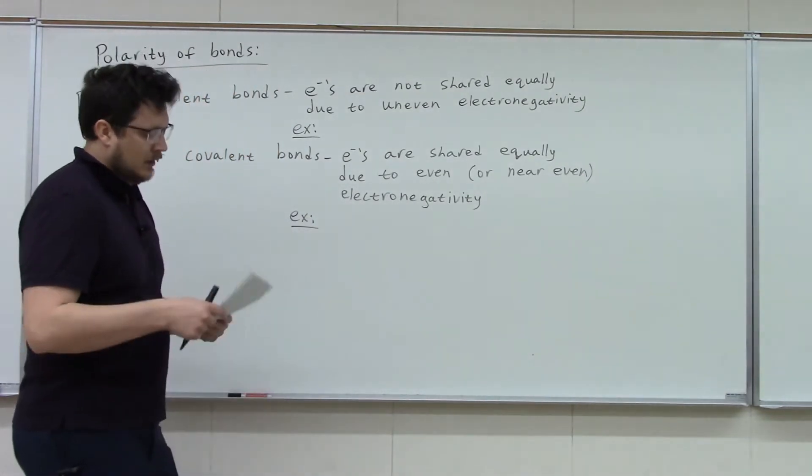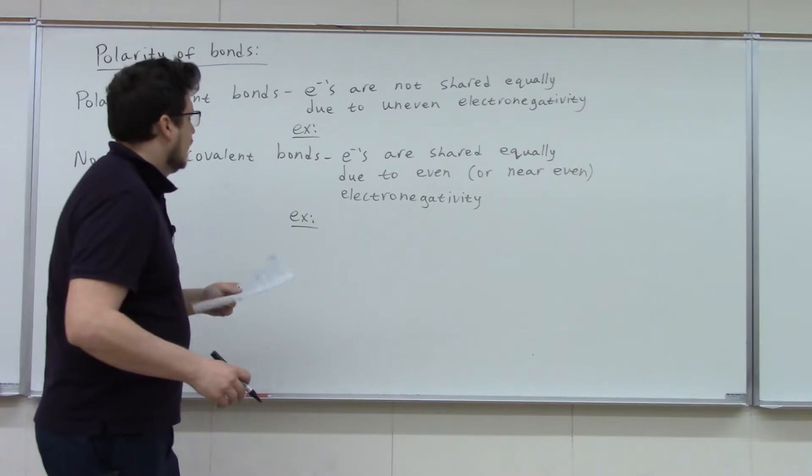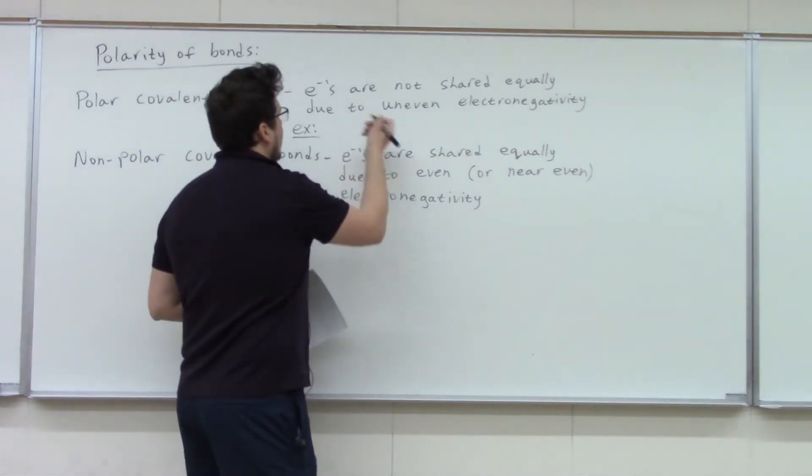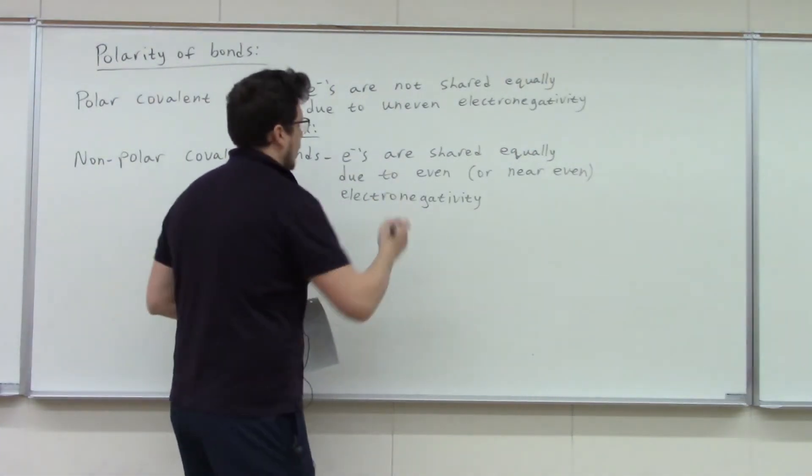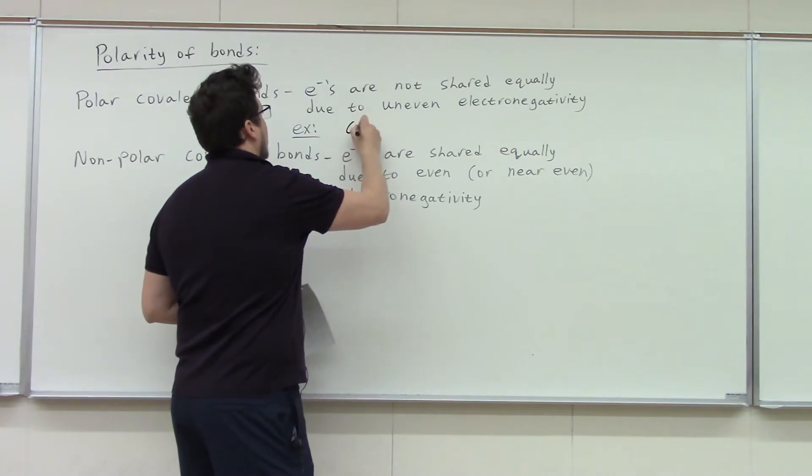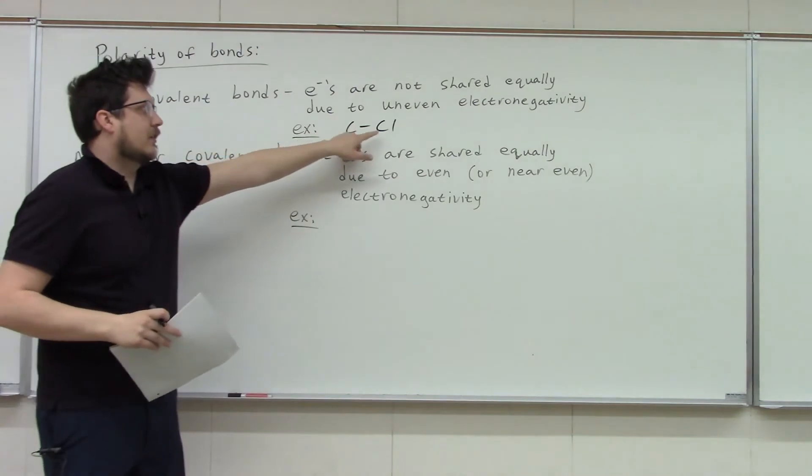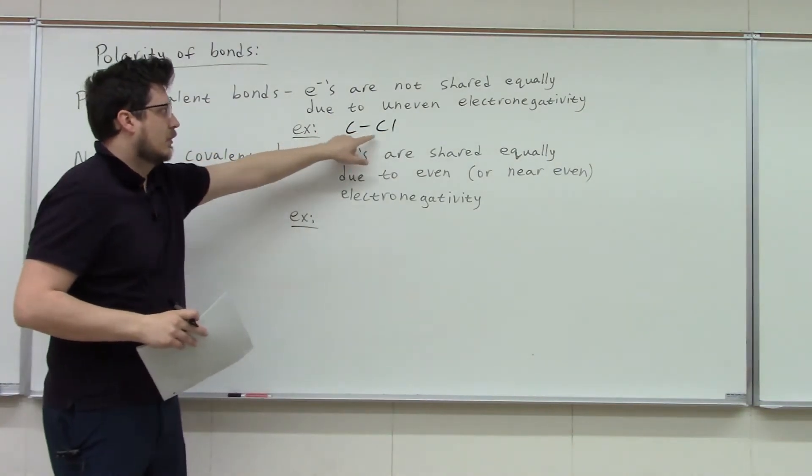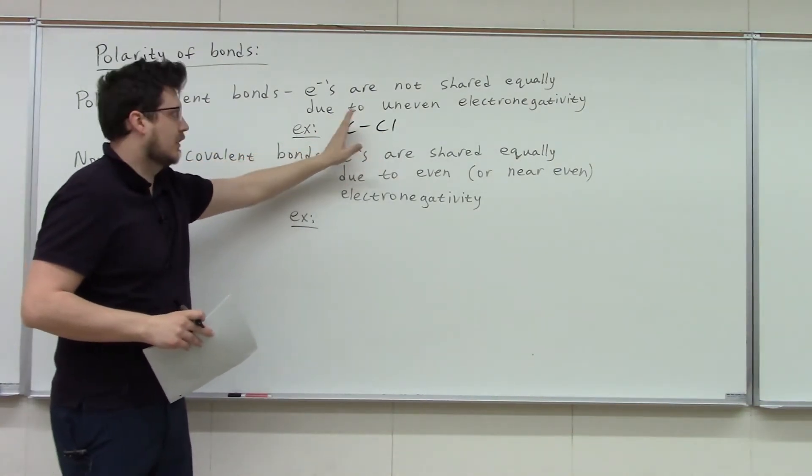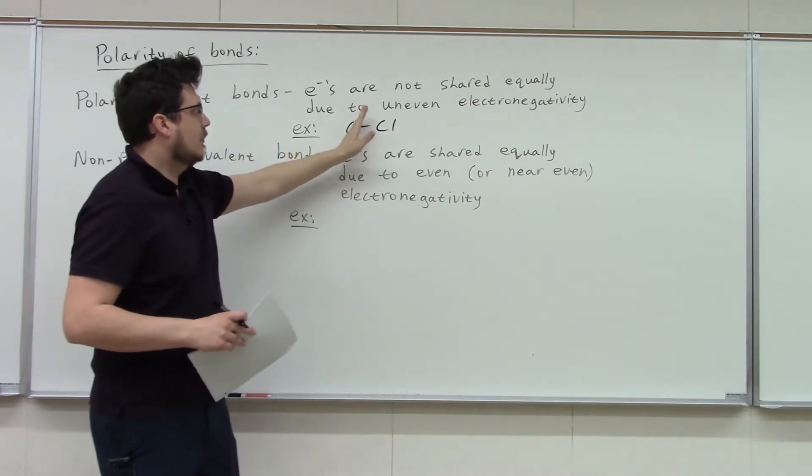So just a heads up on that. But an example of a polar bond would be a bond between carbon and chlorine. Carbon is less electronegative than chlorine. Chlorine is going to hog those electrons. It's more electronegative. They're going to share, but not equally.